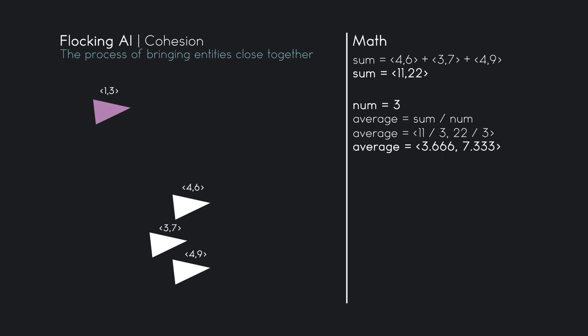That entity that's far away needs to move to that center of mass. Remember, this is an ongoing process — one game loop later, that center of mass will change. But for now we need to move that entity to that center of mass, and then the next game loop we'll redo this calculation and move to a different center of mass value. In order to do that, we need to calculate a vector from our current position to the center of mass, and then normalize that vector.